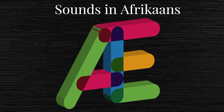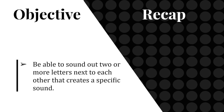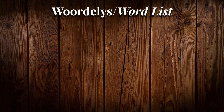Hello and welcome to this lesson about sounds in Afrikaans. After you have finished this lesson, you should be able to sound out two or more letters next to each other that create a specific sound. In this lesson we will revise some of the words covered in the alphabet lesson. You can find the link to the alphabet lesson in the description below. The words you need to memorize for this lesson are the same as they were for the alphabet lesson.